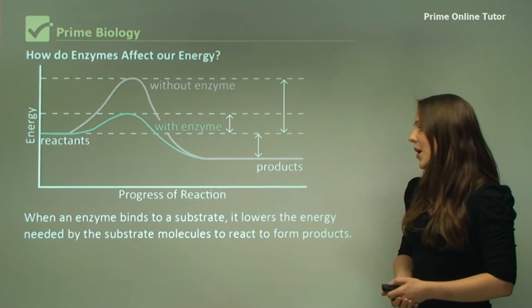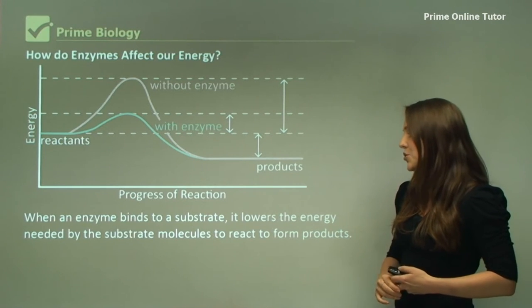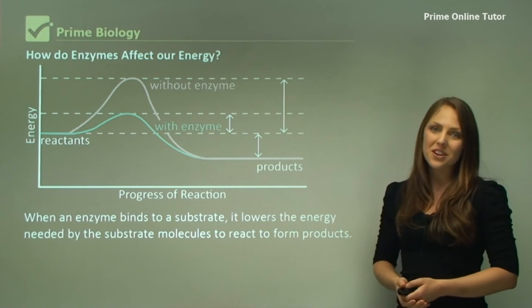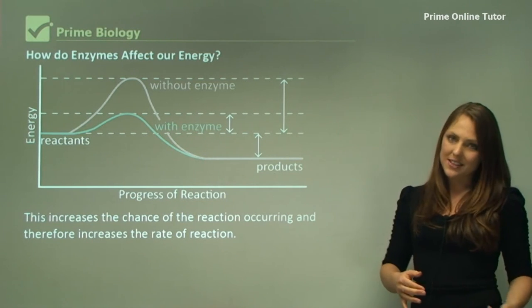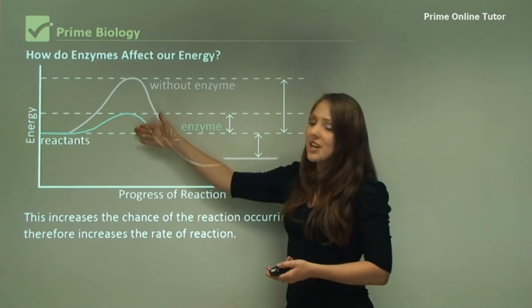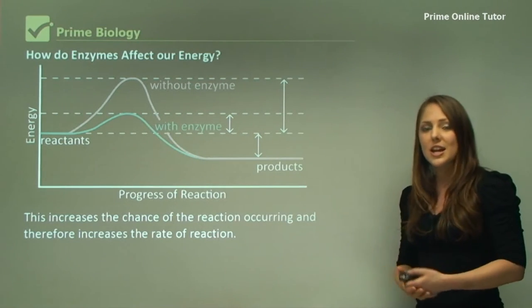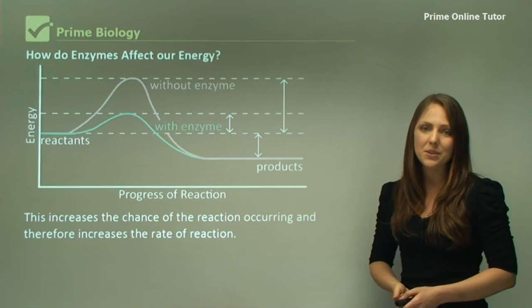When an enzyme binds to a substrate, it lowers the energy needed by the substrate molecules to react to form products. This increases the chance of the reaction occurring and therefore increases the rate of reaction. So not only do they lower the activation energy, it also increases the chance of the reaction to happen rather than if the reaction were to happen spontaneously.